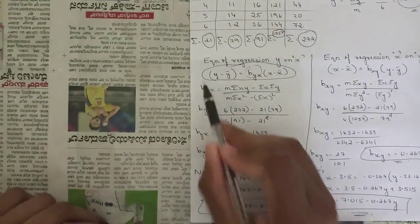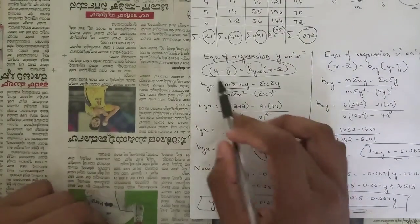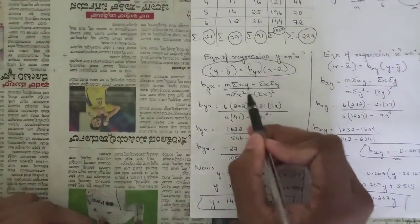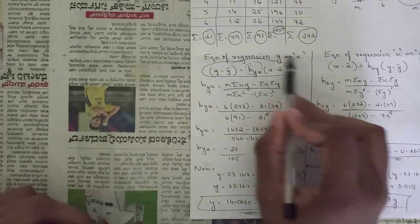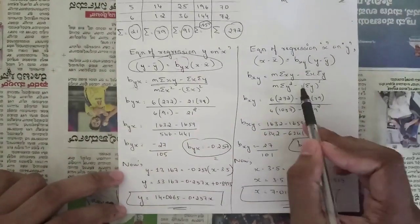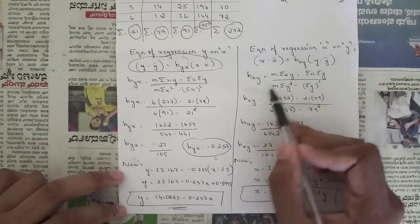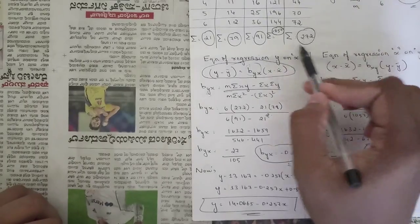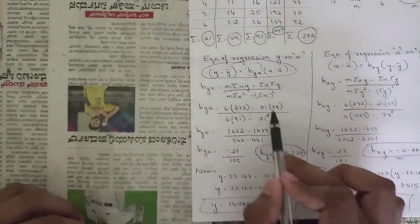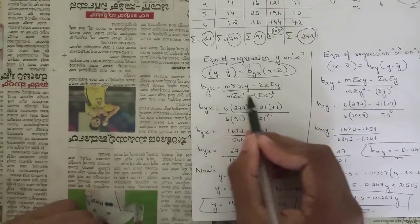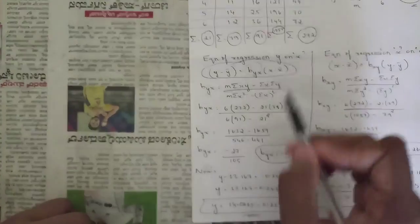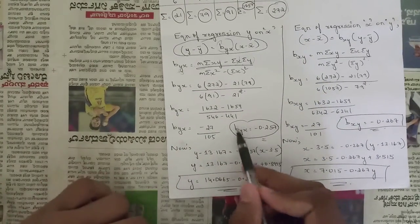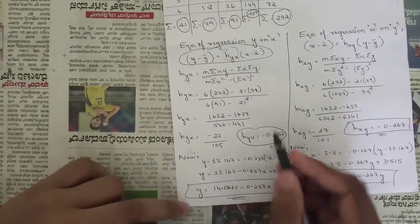Compared to the correlation coefficient formula, the numerator for b_yx remains the same, but the denominator has no square root and contains only x terms. Substituting: b_yx = [n·Σxy − Σx·Σy] / [n·Σx² − (Σx)²] = [6·272 − 21·79] / [6·91 − 21²]. After solving, b_yx = −0.257.